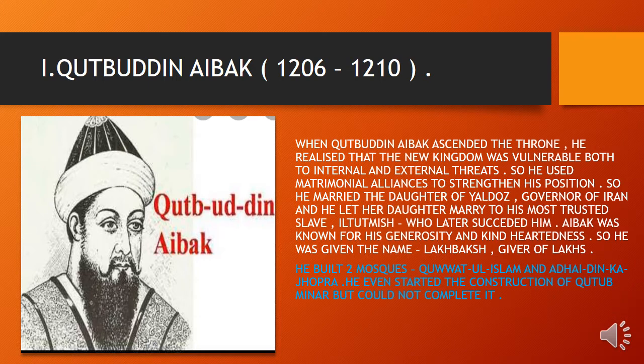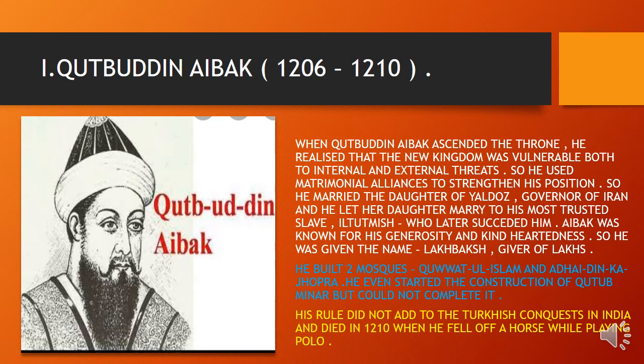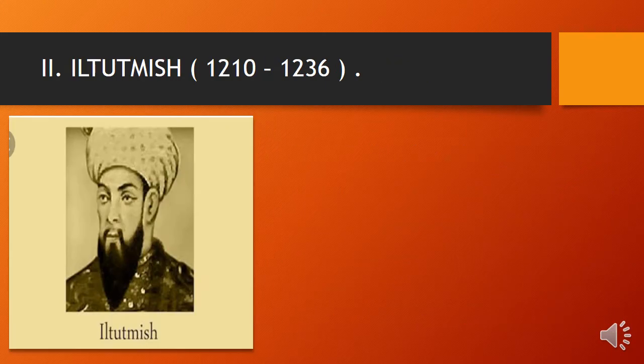Aibak also built two mosques — Quwwat-ul-Islam and Adhai Din ka Jhonpra. He even started the construction of Qutb Minar, but could not complete it. His rule did not add much to Turkish conquest in India, and he died in 1210 when he fell off a horse while playing polo. Aibak was neither killed nor murdered — he died from falling off his own horse while playing polo.